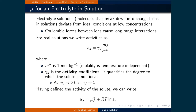Having defined the activity of the solute, we can write the chemical potential of component J as the standard chemical potential of component J plus R times T times the natural logarithm of the activity of component J.